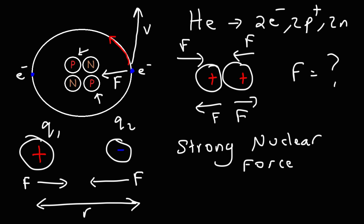The sun, for instance, generates a lot of energy through nuclear fusion. It fuses hydrogen atoms into helium, releasing a lot of light and heat. So the strong nuclear force is very powerful, and now you understand why the nucleus is held together by such a force — it's not pulled apart by the electrostatic force.